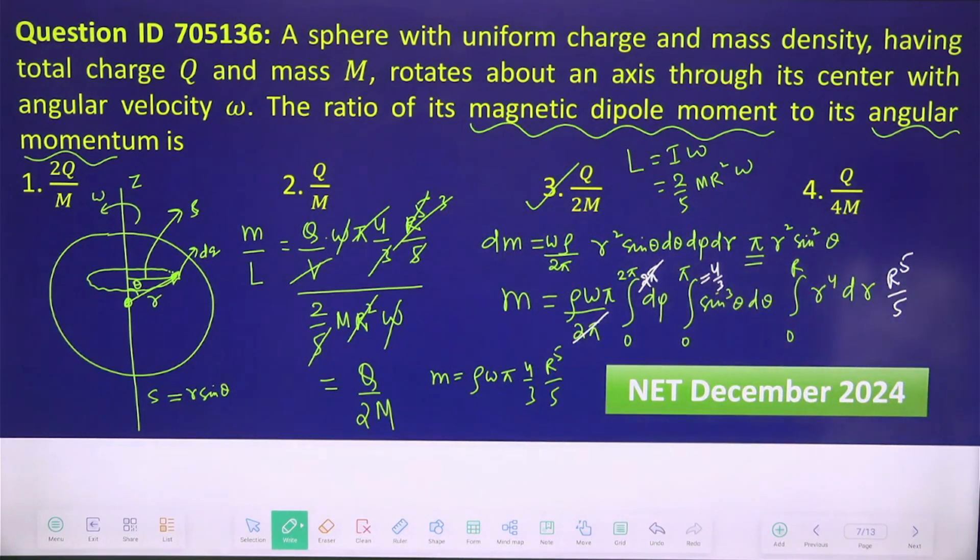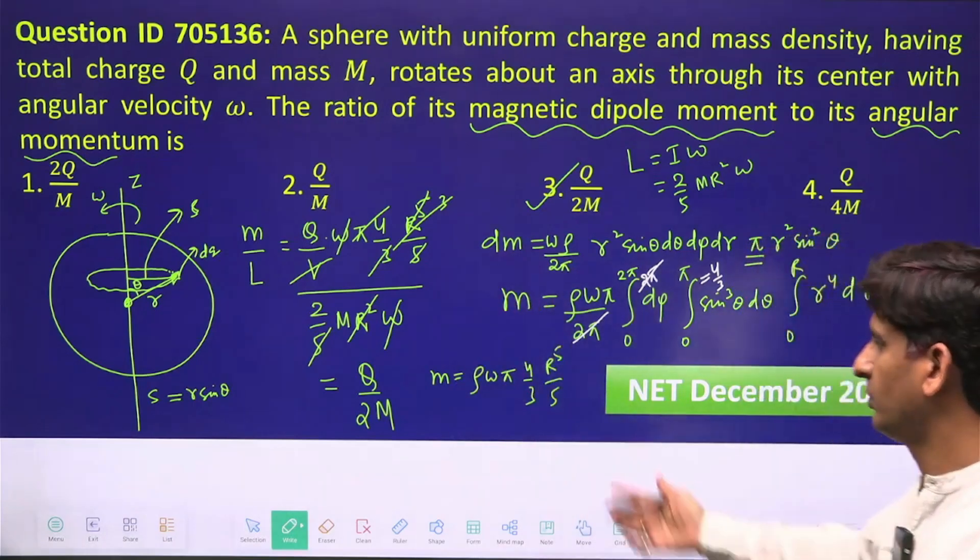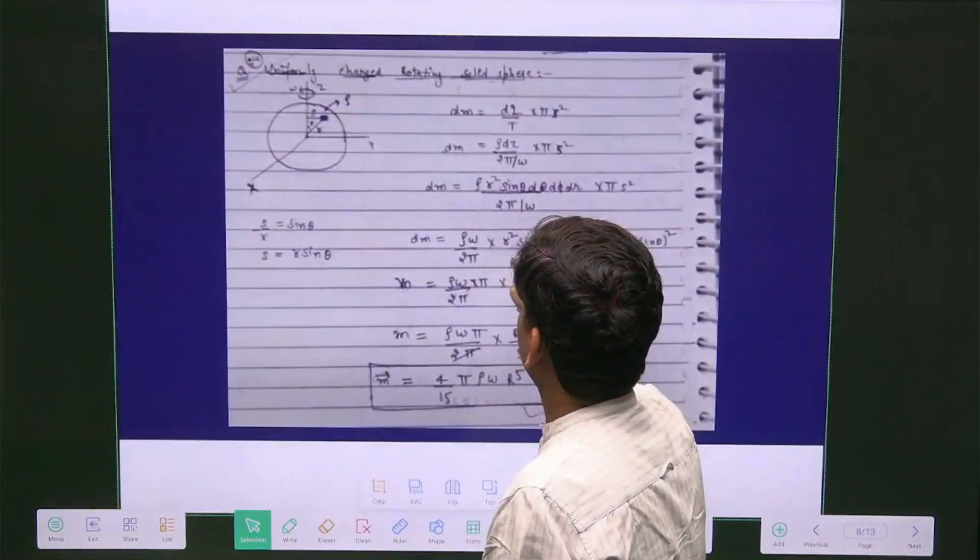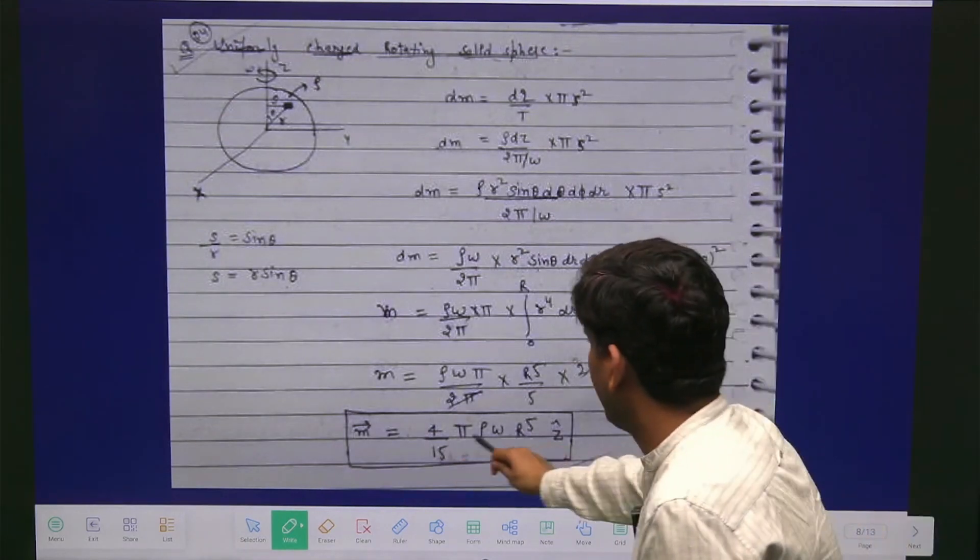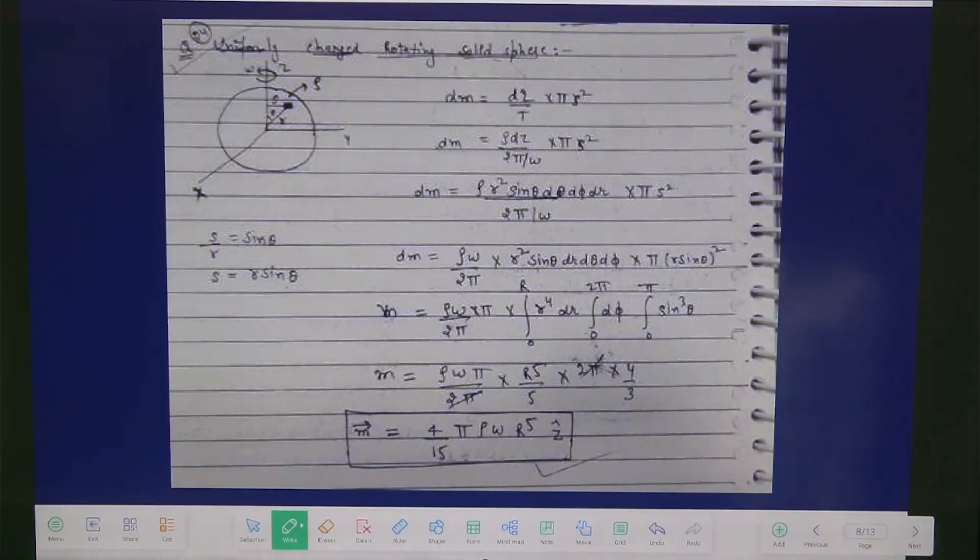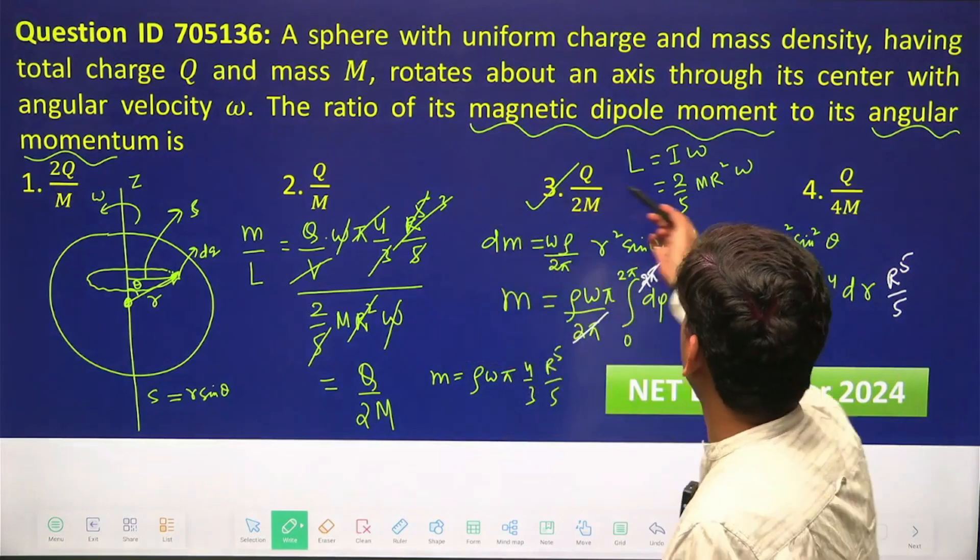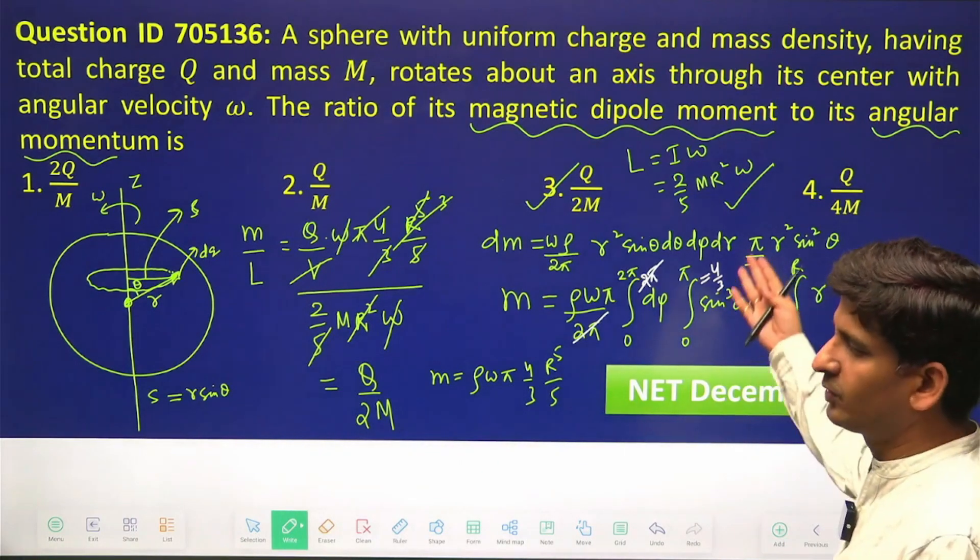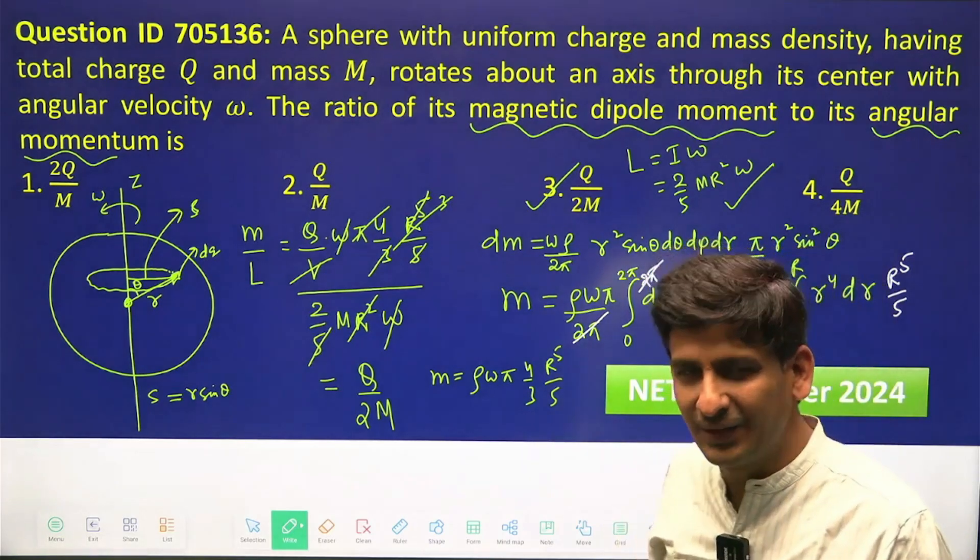Now students, as I told you, I have already done questions for shell also, cylinder also, solid sphere also. Let us check from my class notes. This was this particular question that I discussed in the class for uniformly charged rotating solid sphere, and I calculated the magnetic moment is equal to 4/15 π ρ ω r⁵ in z-cap direction. You find the same result here. Just this L = I ω, you have to put. If it was a shell it will become 2/3. For cylinder you should also know moment of inertia about the axis. For different systems L will change if the same ratio was asked for different cases. Thank you so much.